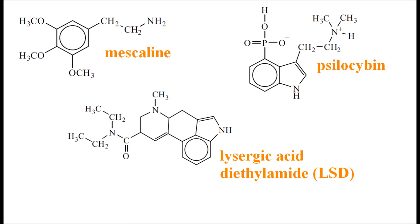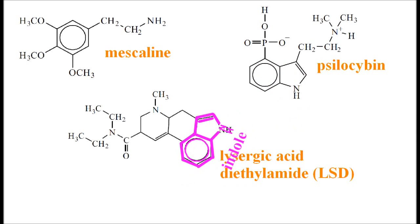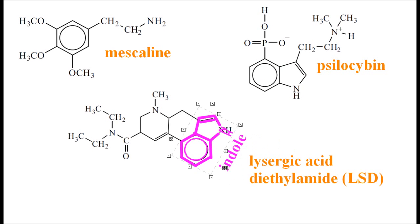Looking at past papers and textbooks, it seems the two things you've really got to know are that psilocybin and LSD share this structure here — a kind of benzene ring with a five-sided doodah attached. That's called the indole ring, or indole. And that appears in psilocybin and LSD.